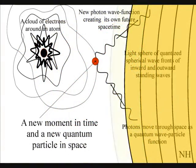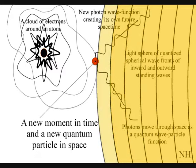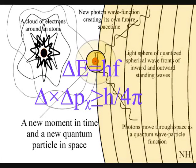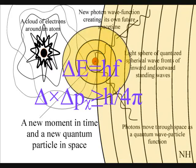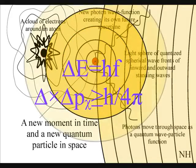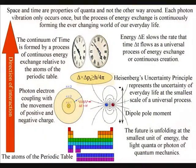This is a simple diagram of an atom with the electron probability cloud interacting with light or electromagnetic waves. The absorption and emission of light forms a quantum wave particle function or probability function that radiates out, forming the uncertainty of everyday life.